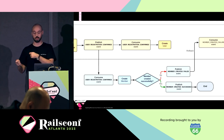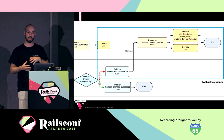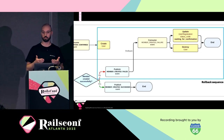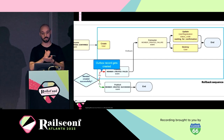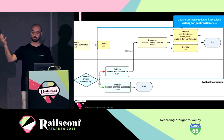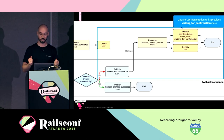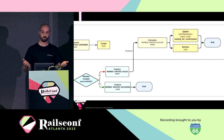But what happens if something breaks on the member side? We go into the rollback sequence. Within each domain we're doing local transactions, so local rollbacks are handled by typical database transactions. But for a cross-domain rollback, we emit the member-created-fail event, create the outbox record that gets published, and go into the user access domain. We roll back the confirmation — setting the user registration status back to waiting for confirmation — and destroy the user record we created. Our database ends up in the same state as we started: a user registration record waiting for confirmation. A consistent state.